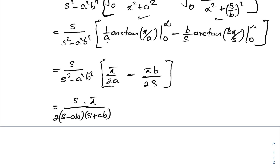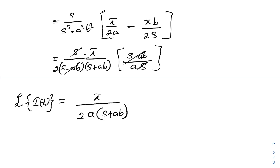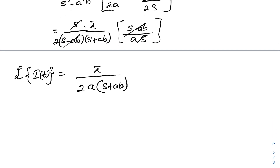We can simplify using the difference of two squares: s² − a²b² = (s − ab)(s + ab). Taking π as a common factor, the s terms cancel, so we have π over (2A) times (s − ab) cancels, leaving π over (2a(s + ab)). We know this equals the Laplace transform of I(t).